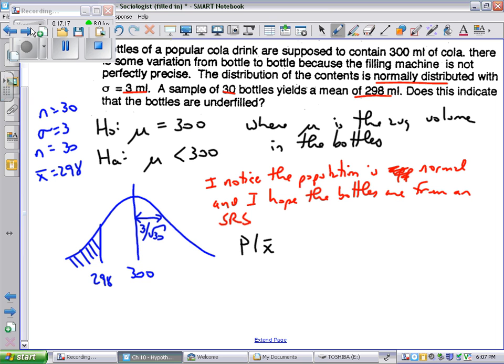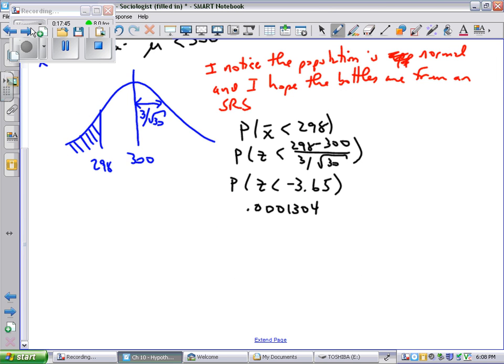The work, what's the probability that I would get an X bar less than 298? So what's the probability? Z is less than 298 minus 300 over 3 divided by the square root of 30. So what's the probability? Z is less than, in this case, it's negative 3.65. And that turns out to be a p-value, if you use your calculator, of 0.0001304. If you're using your pink chart, you would just write p is less than 0.0002. The z-test statistic, let me go through a couple of things real quick. The z-test statistic is negative 3.65. The p-value is 0.0001304. The standard error is 3 over the square root of 30. The statistic is 298. The parameter is 300.